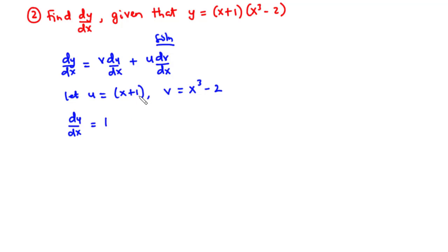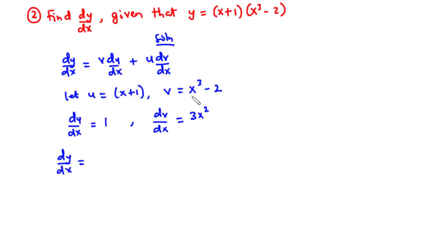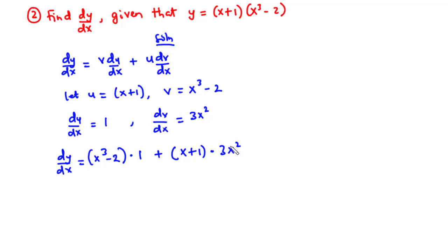Finding du/dx: when you differentiate x you get 1, and when you differentiate the constant 1 you get 0, so du/dx equals 1. For dv/dx: when you differentiate x³ you get 3x², and when you differentiate -2 you get 0, so dv/dx equals 3x².